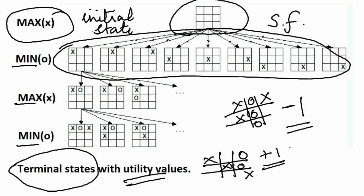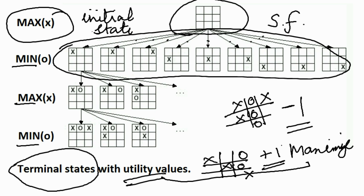Our aim is to maximize the utility value for Max, because positive and higher values are good for Max, while negative values are bad for Max.